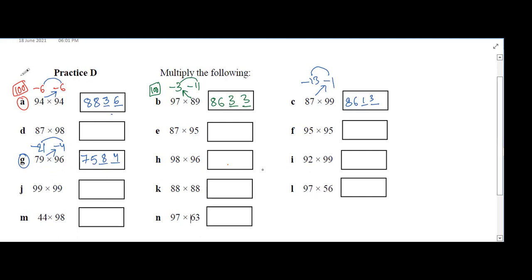Srigoda's question I1: base 100. 92 minus 8, and 99 minus 1. Crosswise: 92 minus 1 gives 91. Reserve two places, product of 8 and 1 is 8 — write 08 to make it double digit. Answer is 9108.